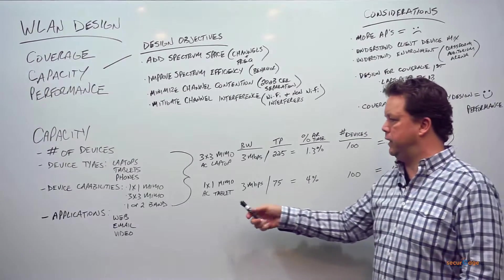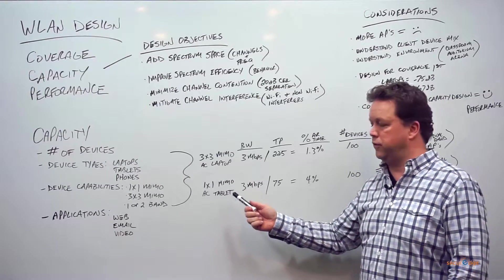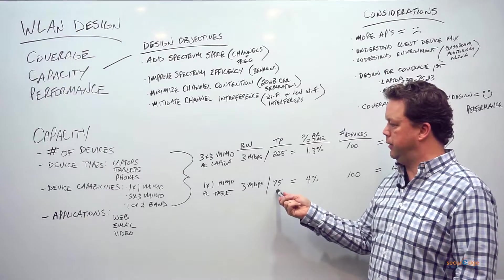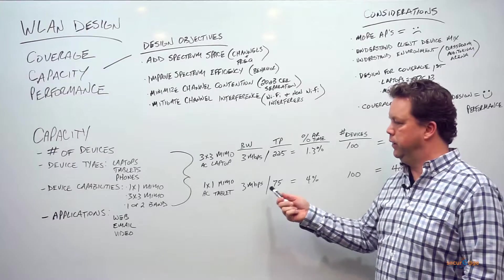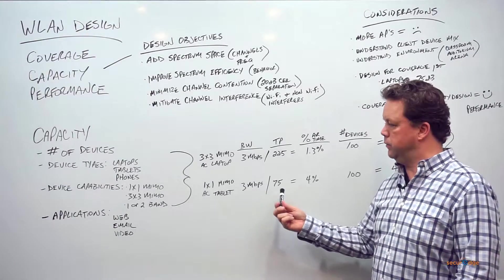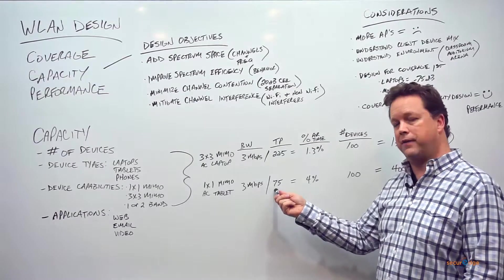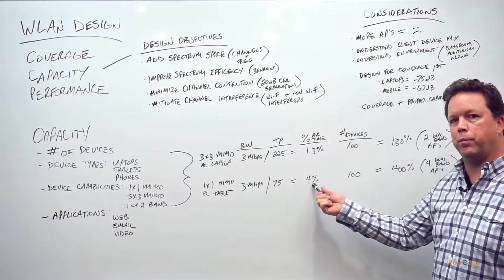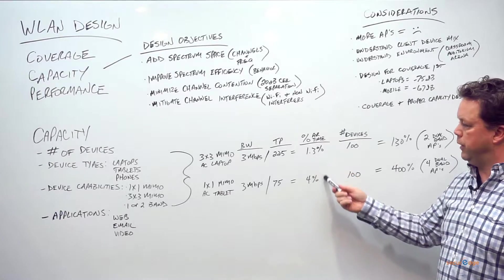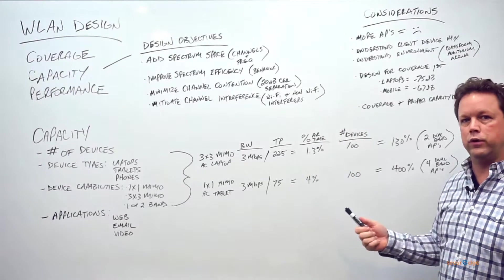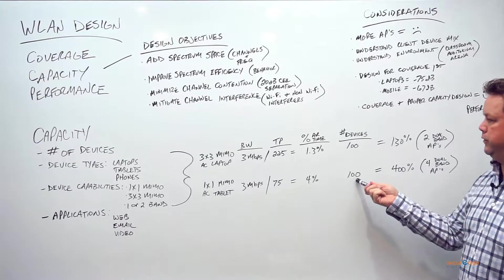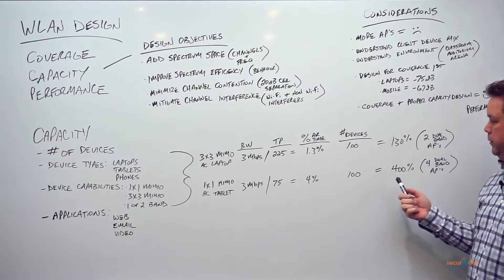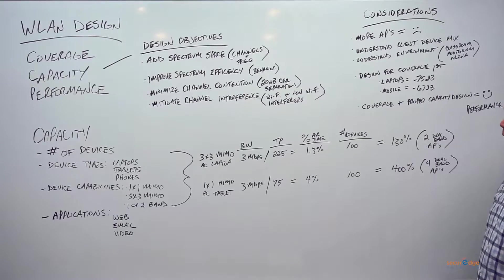On the flip side, if we look at an AC tablet — which is a single spatial stream device — we're still using that same three megabit requirement, but the tablet can only do about 75 megabit throughput. Its data rate connection is about 150 megabits, and we only realize half of that, giving us 75 megabits. Dividing that out, the tablet takes up to 4% of airtime all by itself — three times what the laptop consumes. Multiply that by 100 devices and we get 400% airtime, meaning we need four dual-band access points.